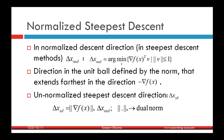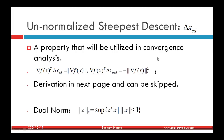The unnormalized steepest descent direction Δx_sd is defined as the dual norm of the gradient of the function times the normalized steepest descent direction — that is, ||∇f(x)||_* times Δx_nsd. This satisfies the property that ∇f(x)^T Δx_sd equals negative of the square of the dual norm of the gradient. We will derive this relation in the next few slides.